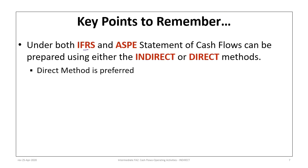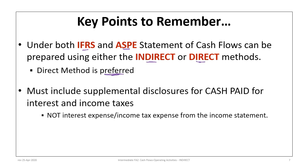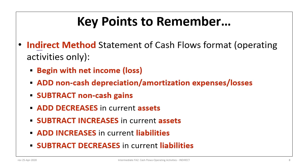Let's wrap up with some key points. Under both IFRS and ASPE, the statement of cash flows can be prepared using either the indirect or direct approach; however, the direct method is preferred because it provides more meaningful information to users. We must include supplemental disclosures for cash paid for interest and income taxes — those are not the same as the expense amounts on the income statement; we adjust for changes in the related balance sheet accounts. Under the indirect method, we always begin with net income or net loss, then add non-cash depreciation, amortization, and other non-cash expenses or losses.